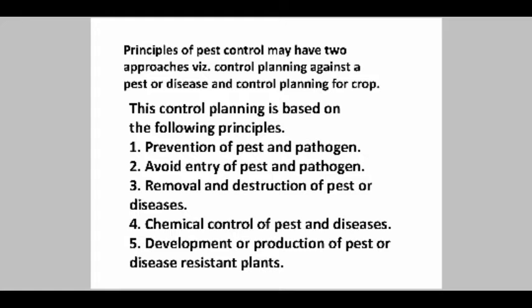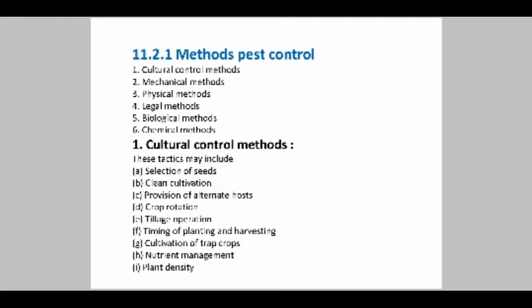In the controlling part, some principles are taken. First, prevention of the pest and pathogens — avoiding the entry of pests and pathogens, removal and description of pests and their diseases, chemical control of pest and disease development, or the production of pest or disease resistant plants. The methods of pest control include the cultural control method, mechanical method, physical method, legal method, biological method, and chemical methods.